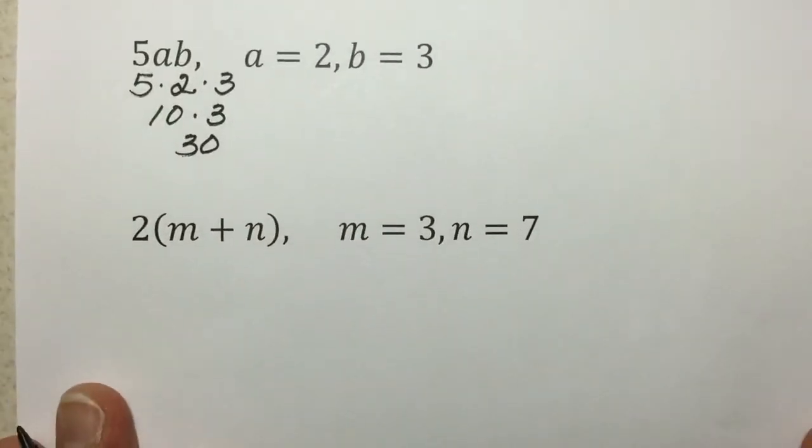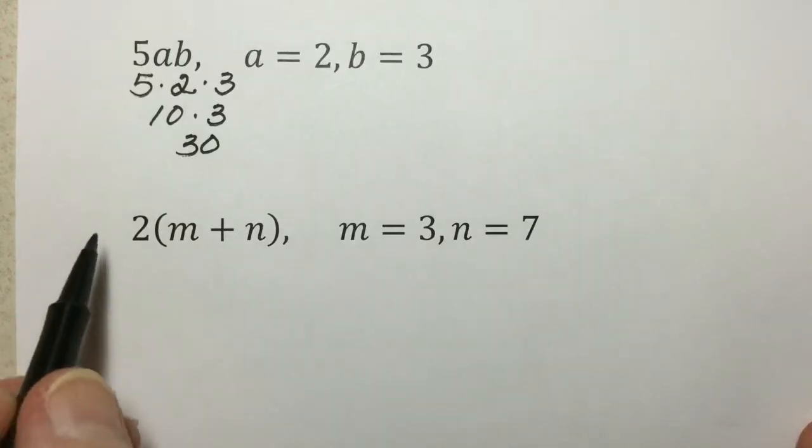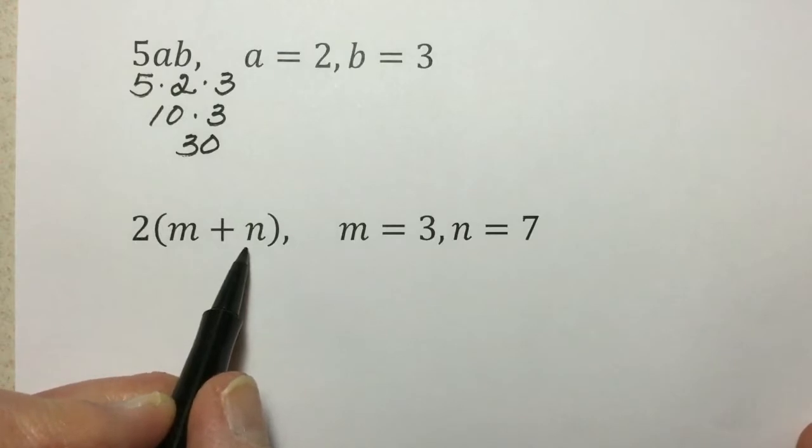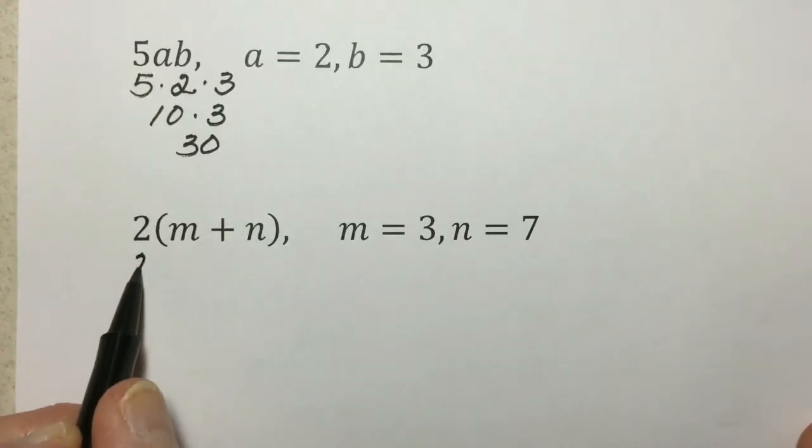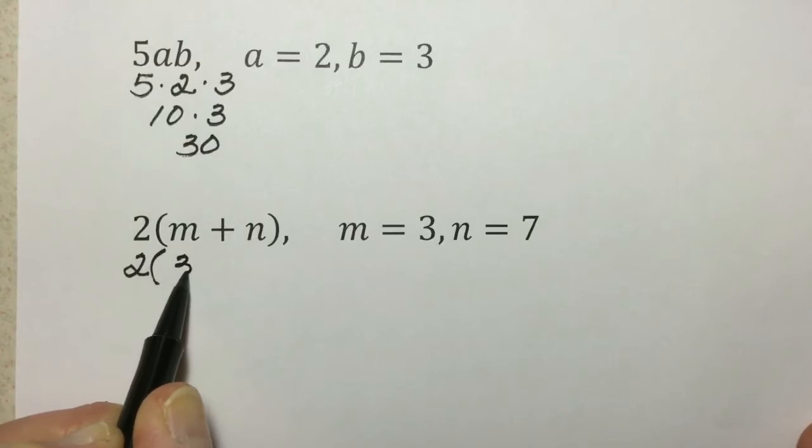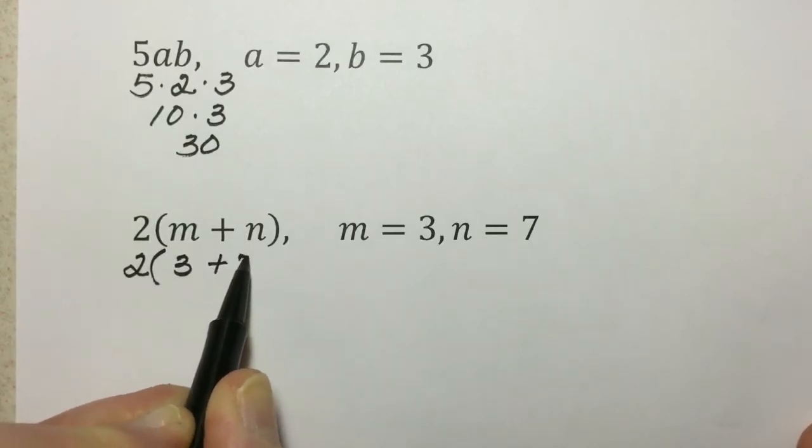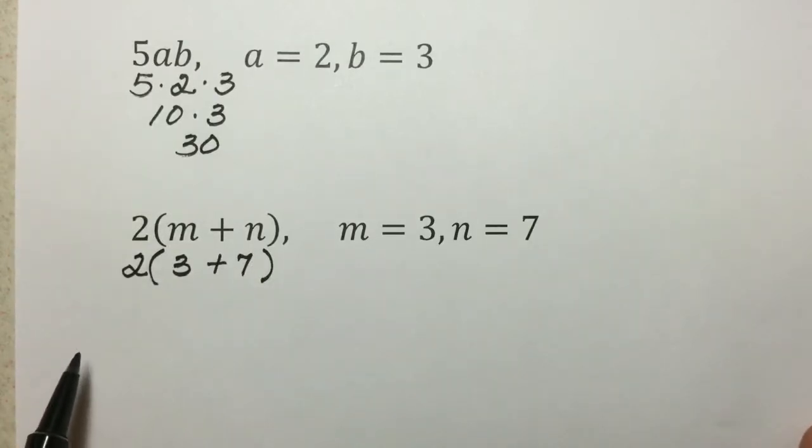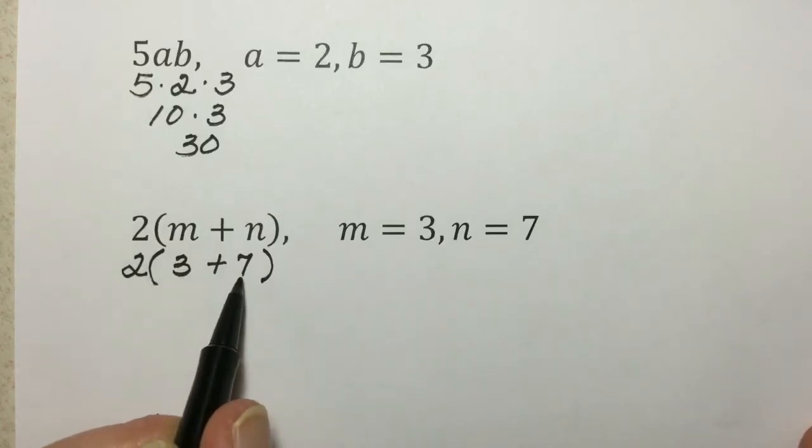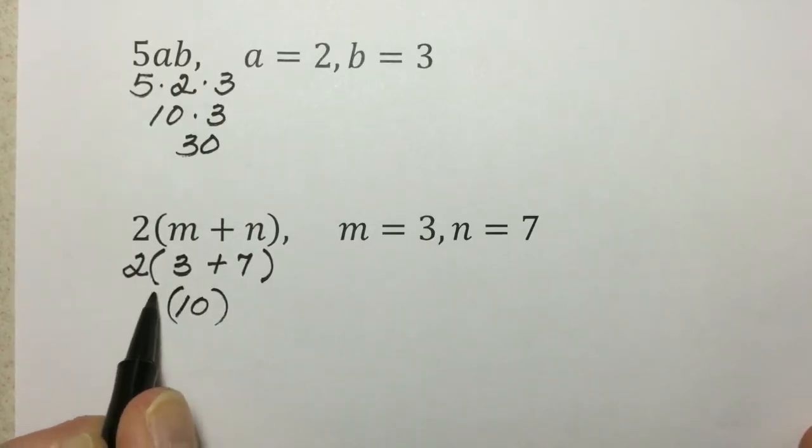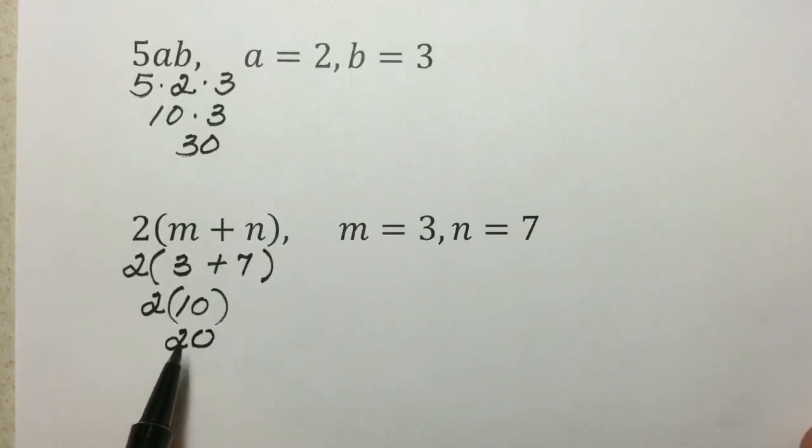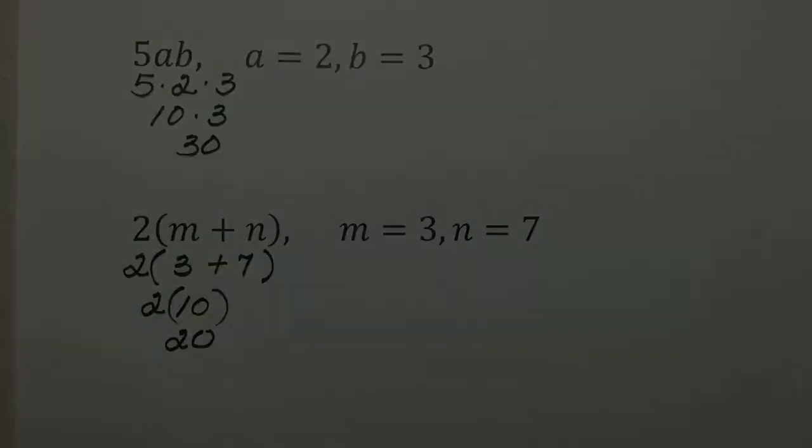In this last example, this also is a variable expression where we have parentheses of these quantities that are expressed as a variable. We'll replace those values. Following order of operations, we'll simplify inside the parentheses first. Adding the 3 and 7, the replaced values for the variables gives us 10. And then last operation, the implied multiplication, giving us a value for this expression of 20.